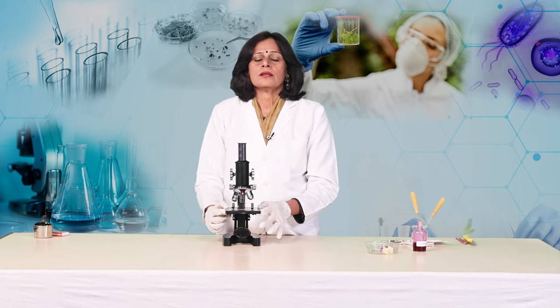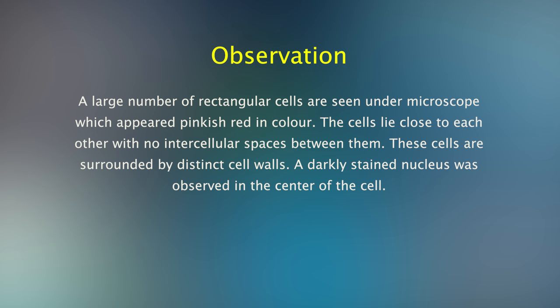We are going to take the following observations. First, a large number of rectangular cells are seen under microscope which appear pinkish red in colour. The cells lie close to each other with no intercellular spaces between them. These cells are surrounded by distinct cell walls. A darkly stained nucleus was observed in the centre of the cell.